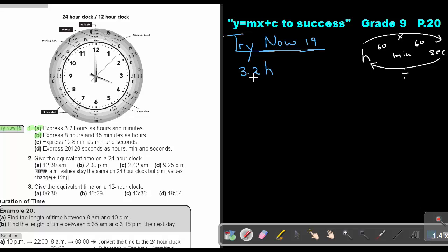So if I say 0.2 hours, if I want to go from hours to minutes, I must multiply 60. So I will just say 0.2 and I will just multiply by 60 and that will give me 12 minutes. So therefore, it will be 3 hours and 12 minutes.